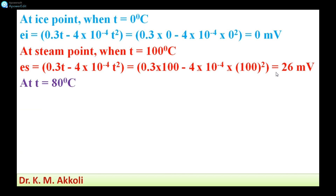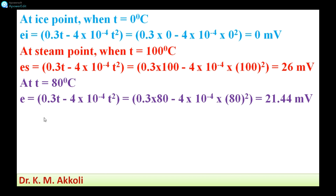Then we find the EMF at 80 degrees Celsius. Using the same equation with T equals 80: E = 0.3 into 80 minus 4 into 10 raised to minus 4 into 80 squared, which gives E equals 21.44 millivolts.